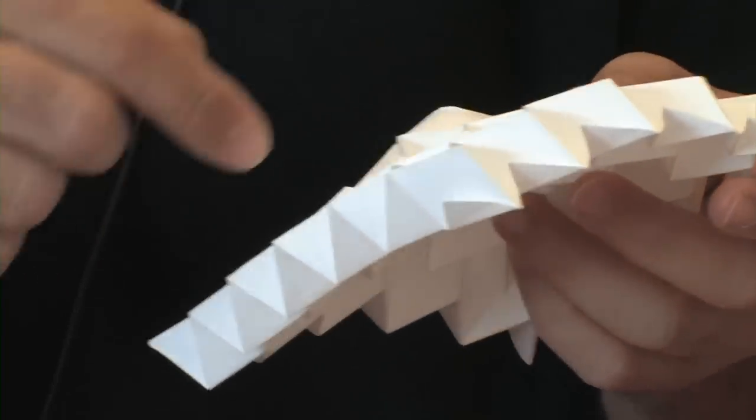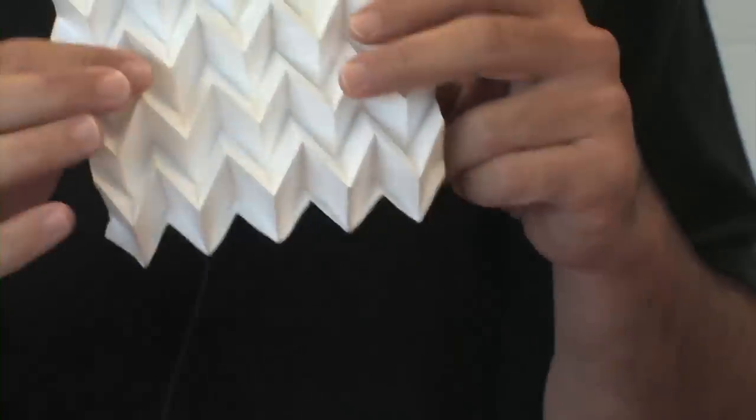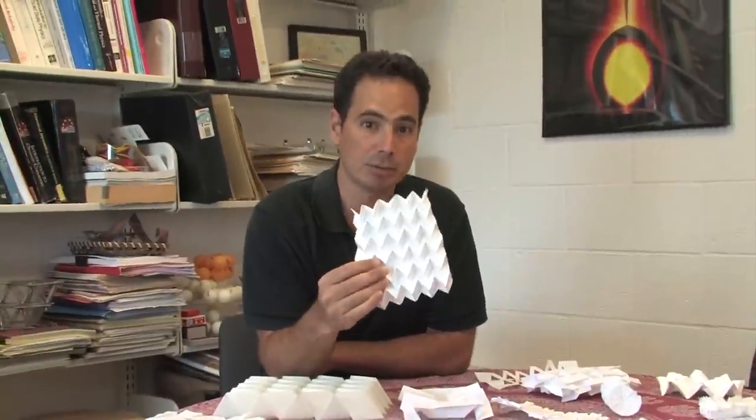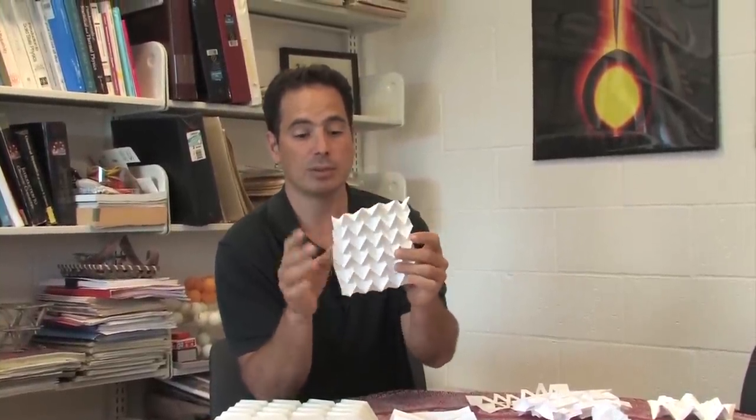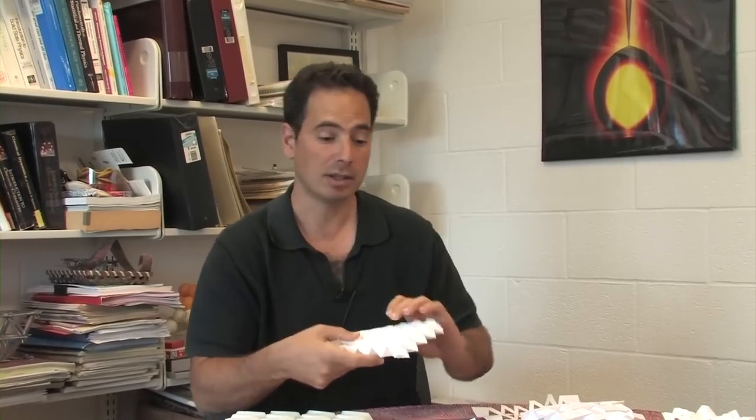And by arranging these pop-through defects on my sheet, I can effectively tune the mechanical properties. So this is a form of programmable matter where we can not only fix one pattern and get one set of mechanical properties, but we can change that pattern on the fly.